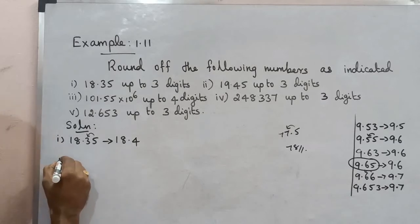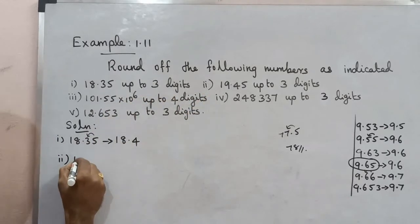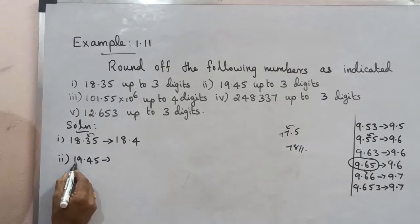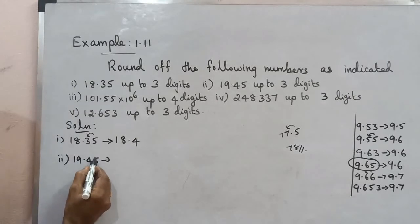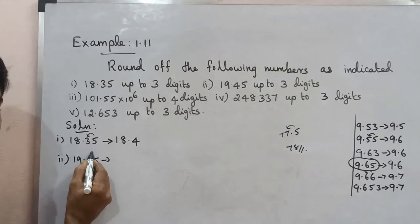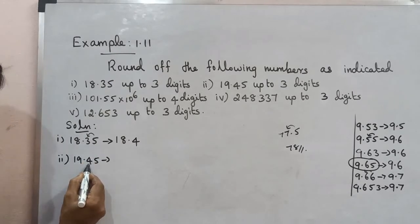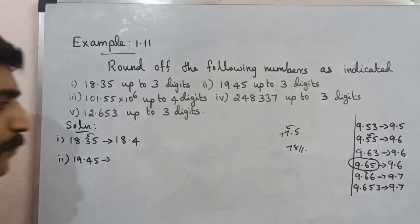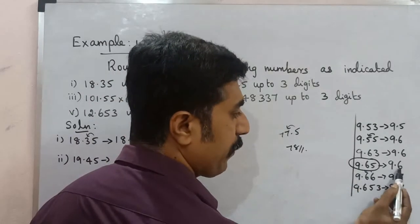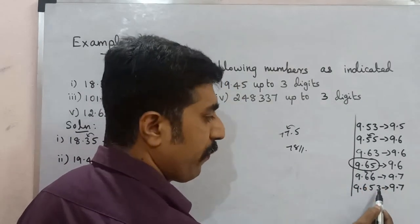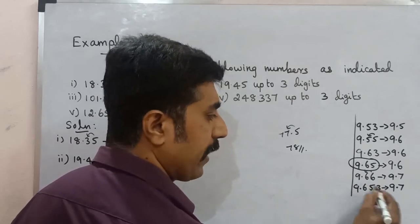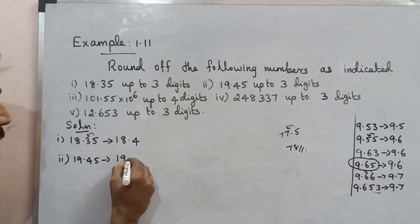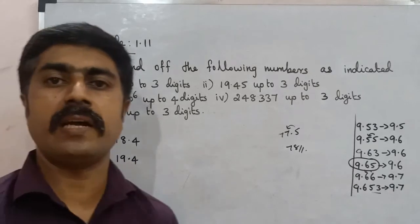Example 2: 19.45, round to 3 digits. Counting 1, 9, 4 — that gives us 3 digits. The last digit to drop is 5. The preceding digit 4 is even, so the last digit is dropped and the digit is left unchanged. Therefore 19.45 rounded to 3 digits is 19.4.